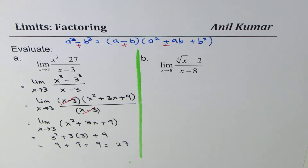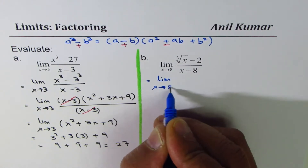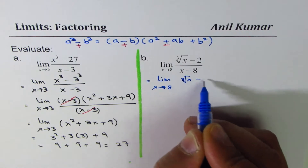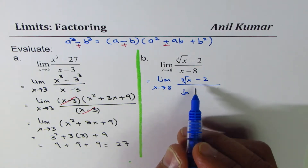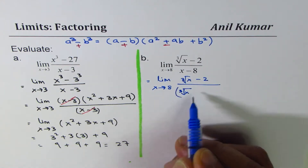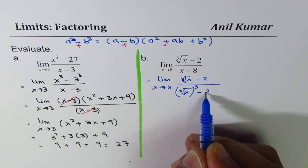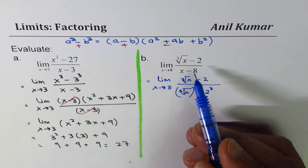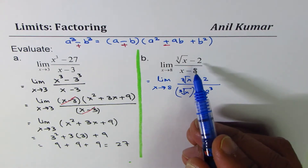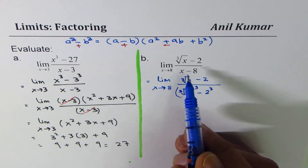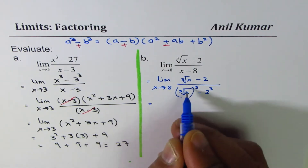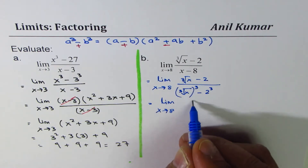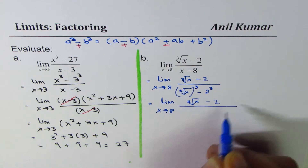I'd like you to pause the video and do the second question yourself. Here is my solution. We write this as limit as x approaches 8 of (cube root of x minus 2). We can write cube root of x as (cube root of x) cubed, so this becomes a cube minus b cube form. We could do this with rationalization also, but rationalization is tricky for cube root and cubic functions. It's preferable to use either variable substitution or this factoring technique. So let's go ahead and factor this out.